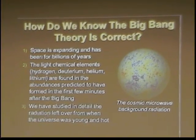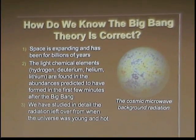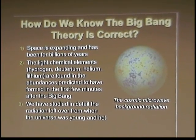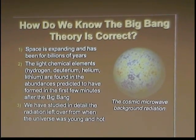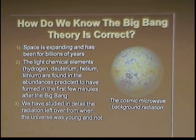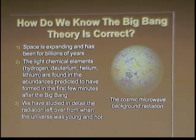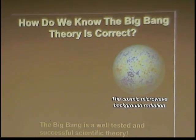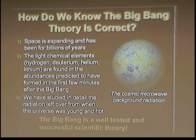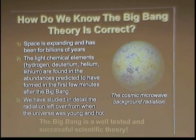Thirdly, we have this background radiation that we see all over the sky — three degrees Kelvin, barely over absolute zero, that we're bathed in. We've studied it in amazing detail, and you see this sort of pattern over the sky, produced at about 300,000 years. So we have these and others, but these are three of the strongest indications we have of the Big Bang hypothesis being valid.